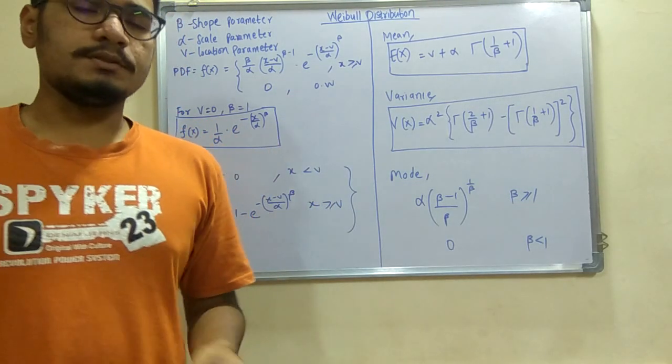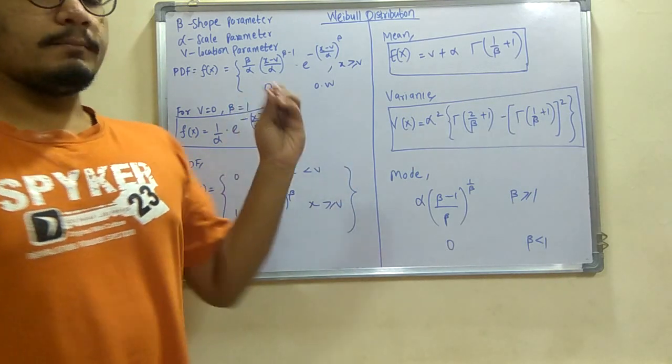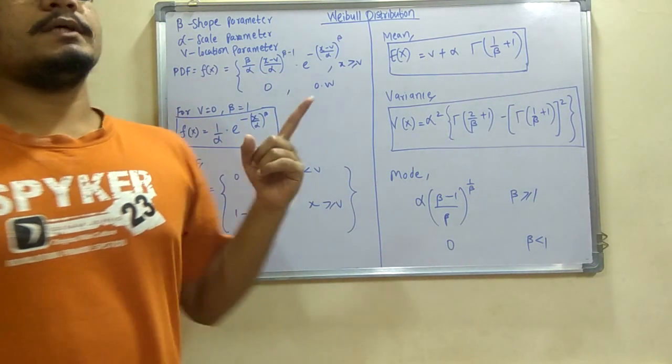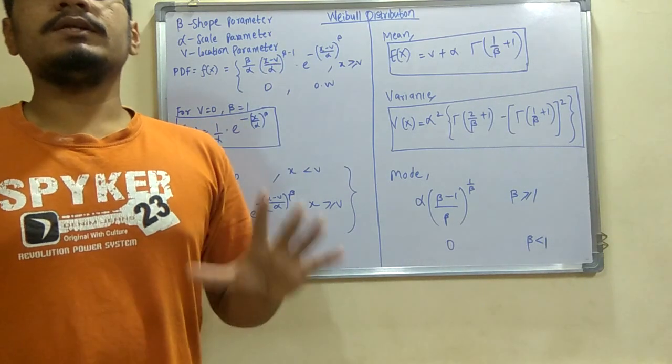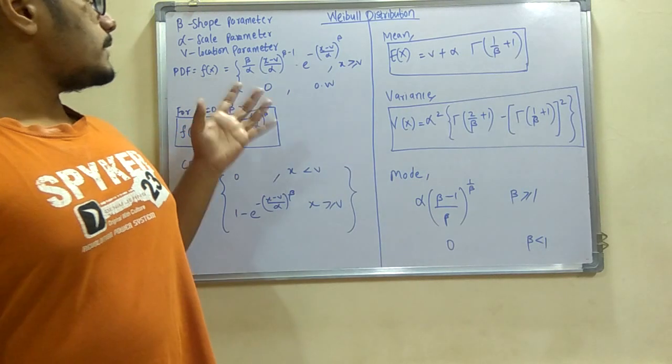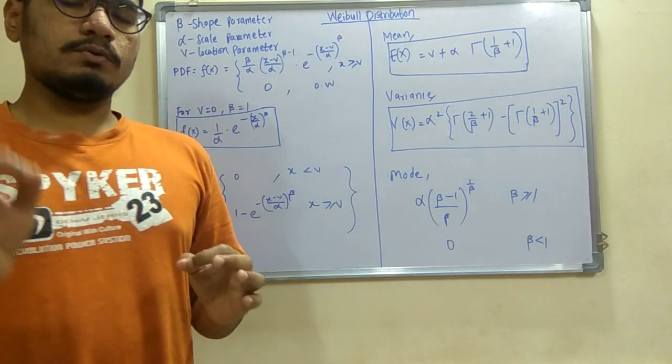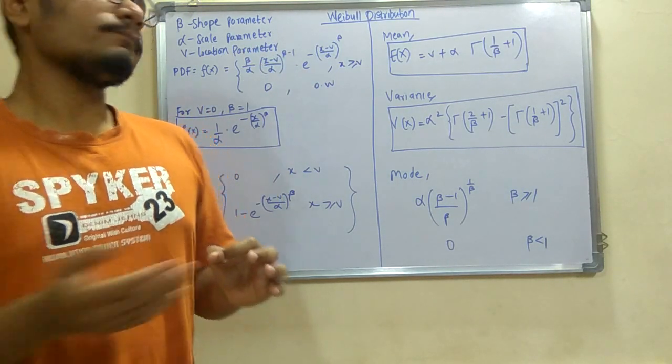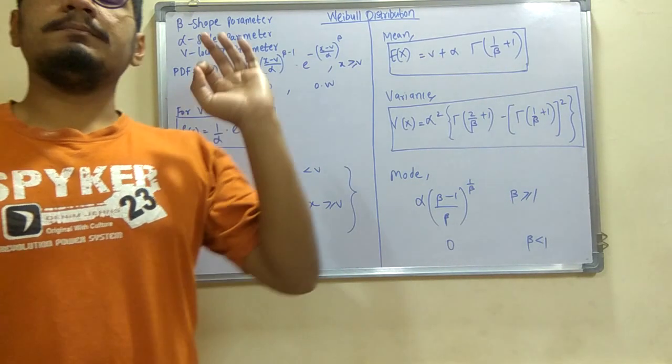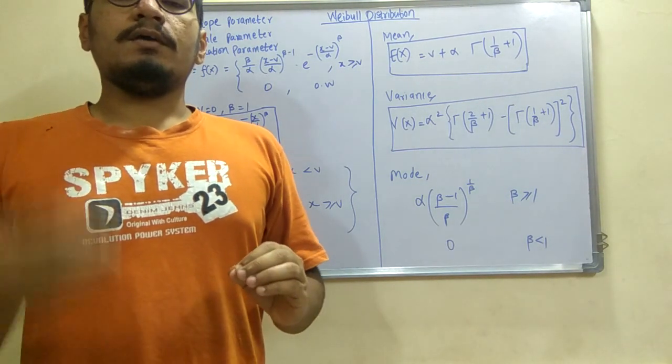The main parameter in this is beta, the shape parameter. I have discussed the triangular distribution also where there were three parameters A, B, C, and in that also the B parameter was a shape parameter. So in this also, beta is the shape parameter and this beta decides which parameter or to what extent the algorithm does.